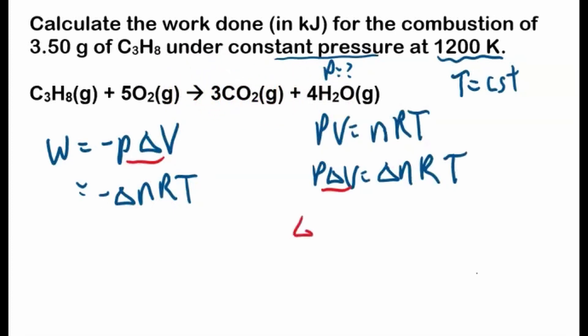So our delta moles - a change means final minus initial, always, usually always. And the final in this case are the products, moles of the products, minus moles of the reactants. And for the balanced equation, using this balanced equation, we have seven moles of products that are produced for every six moles of reactants.